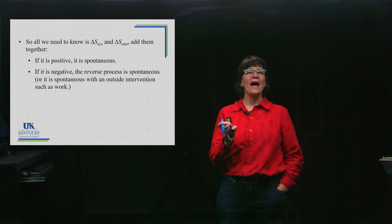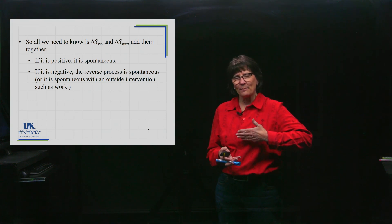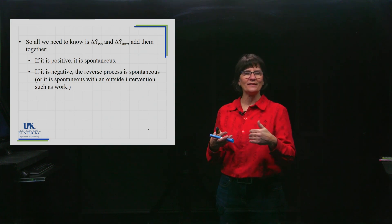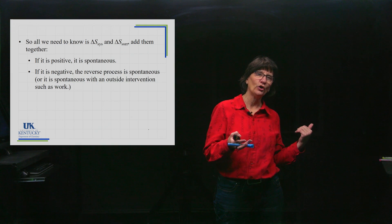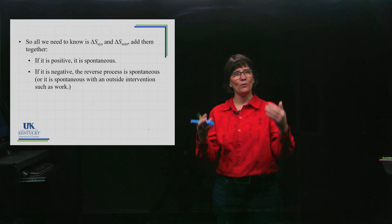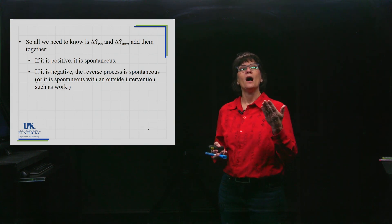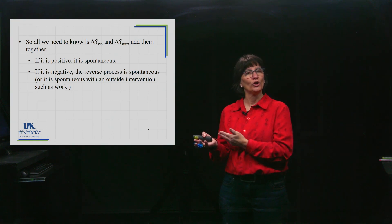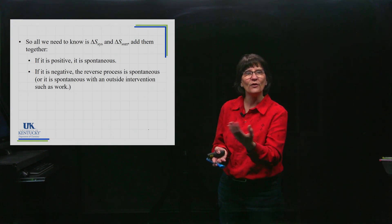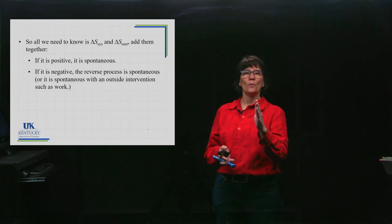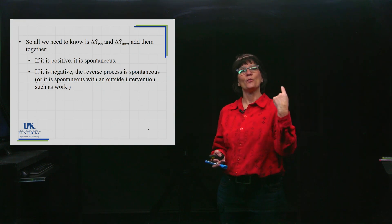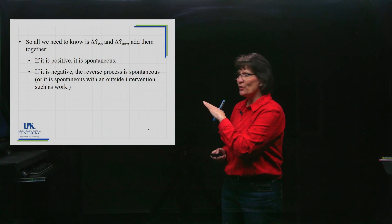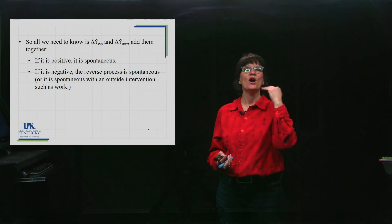In a battery, the chemical reaction happens spontaneously, generating electrons to run your device. When the battery is rechargeable and runs low, you hook it up to an external source of electrons that pushes into the battery and forces the reverse reaction to occur. So the reverse reaction occurs because you're supplying that external energy — the work from those electrons. If delta S of the universe is negative, the reverse process is spontaneous, or you can supply external energy to make it occur.